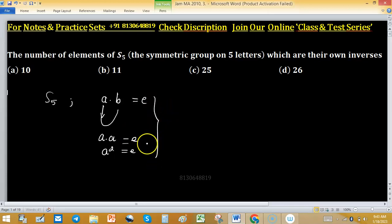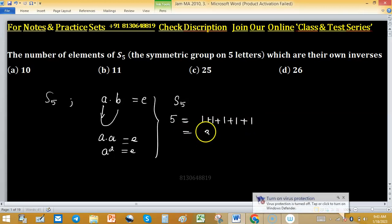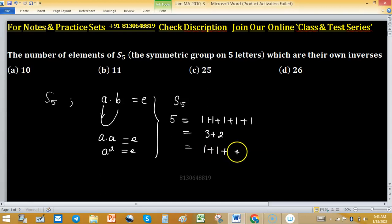In other words, we're seeking the number of elements of order 2 in S5. So partitions of 5 are: 1+1+1+1+1, 3+2, 1+1+1+2, and 2+2+1, and many others.